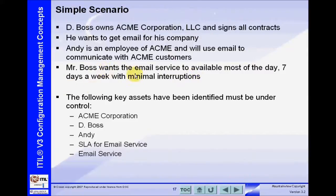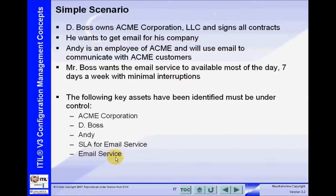In this simple scenario, we've identified five key assets that we want under control. Things that we want under control are called configuration items, and they belong in the configuration management database. Here we have the Acme Corporation, D-Boss, Andy, the SLA for the email service, and the email service itself.